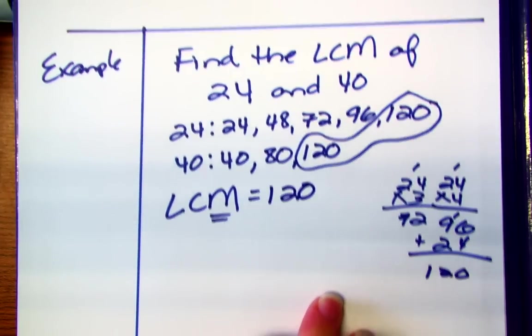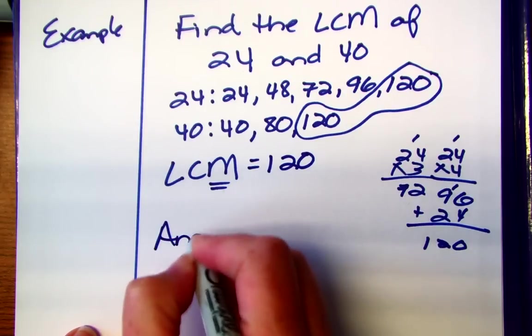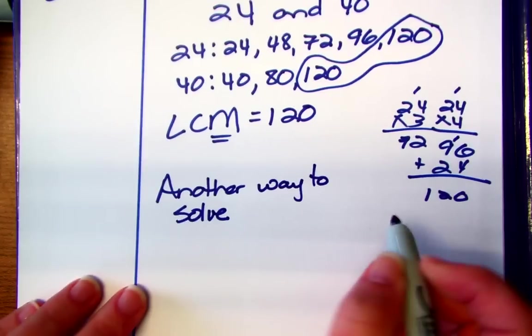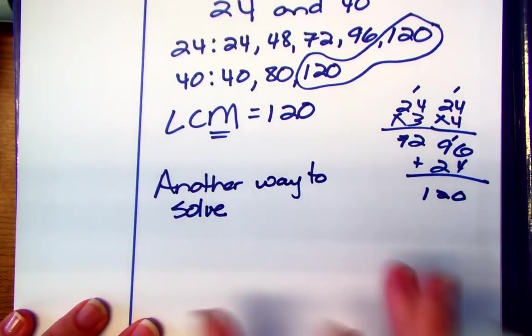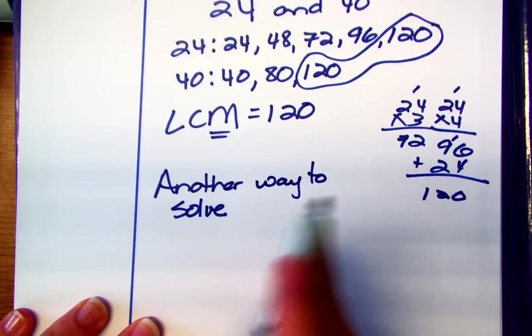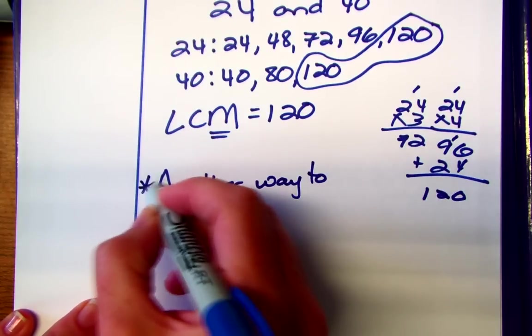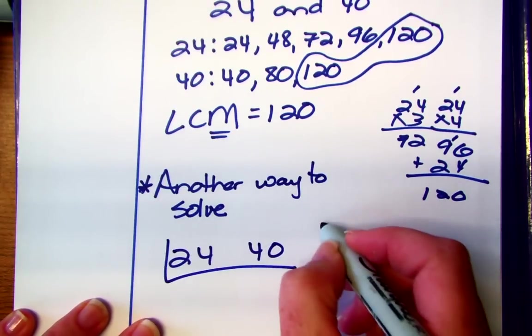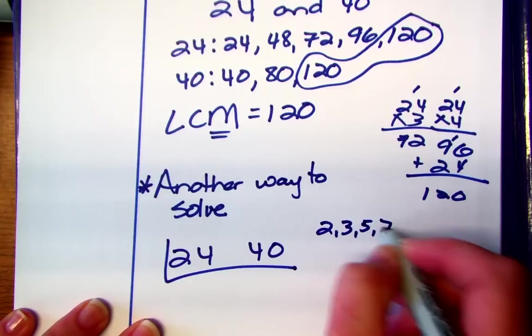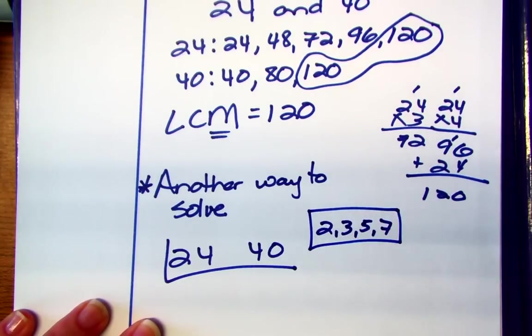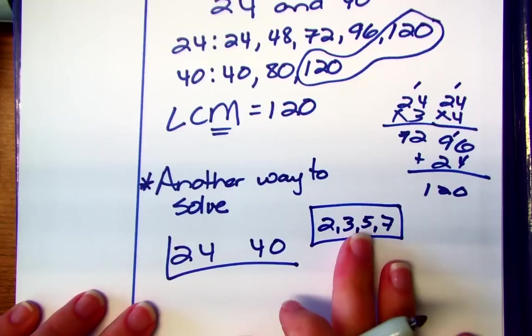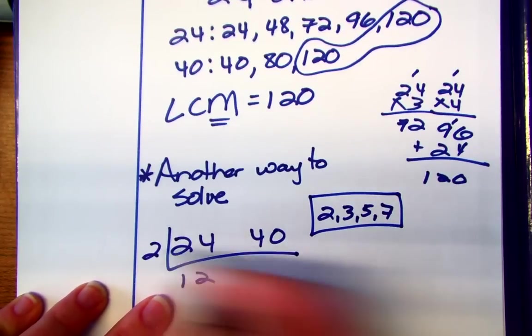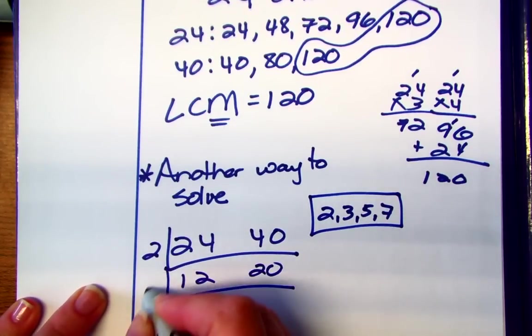Now just like we had for the greatest common factor this is another way to solve and this is that birthday cake way. So what you need but it's a little bit different than the greatest common factor so you have to pay attention to the differences. So we have 24 and 40. I'm going to make my first layer. Oh they're both even so I know I can factor out a 2. So 24 divided by 2 is 12, 40 divided by 2 is 20 and I can factor out another 2.